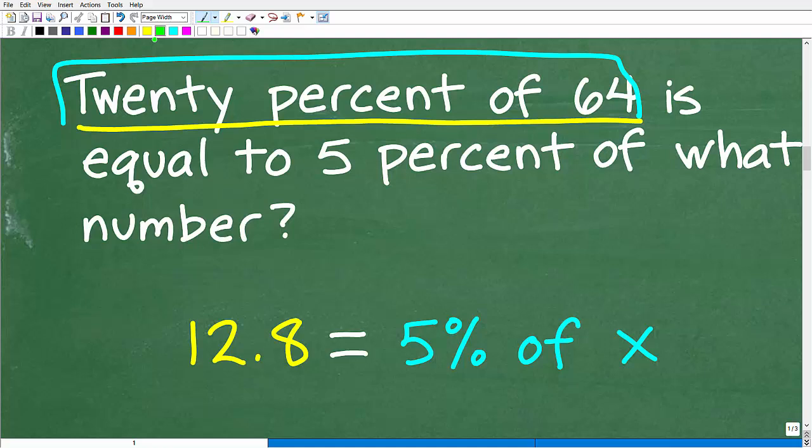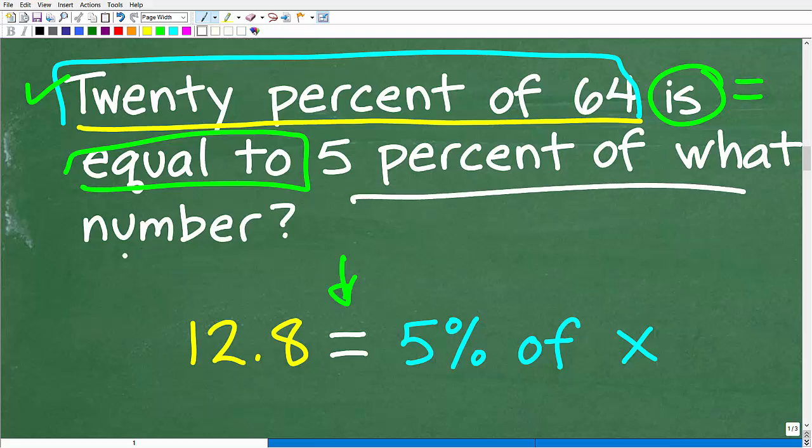So the first thing that we want to notice is this word, is. Anytime you see is in a math word problem, that is the equal sign. And here it's really clear too, because it says is equal to. So this part of the problem, what comes before is equal to, is going to be equal, literally equal. So we could put an equal sign in between this part of the problem and this part of the problem, which is 5% of what number? Now we don't know this number. Because we don't know the number, we can kind of establish a variable like x. This is where we're going to be using algebra. Because we don't know the number, let's let this symbol represent that number.